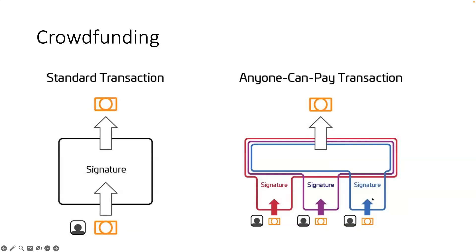Let's say a village wants to fund a lighthouse. Nobody wants to fund it alone, so they launch a crowdfunding project: if they can raise 100 bitcoin they'll build the lighthouse, but if it can't be raised everyone gets a refund and the project is a no-go. How do you do this in Bitcoin? Very simply — by using ANYONE_CAN_PAY.